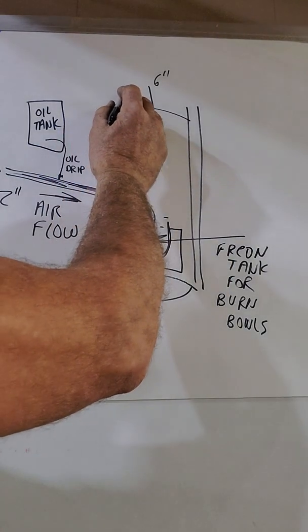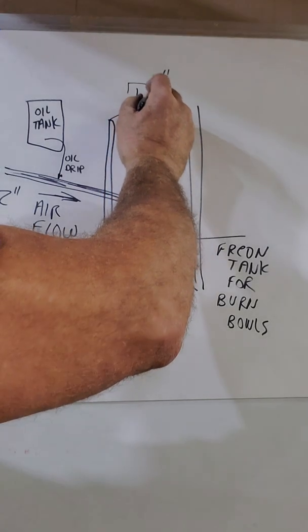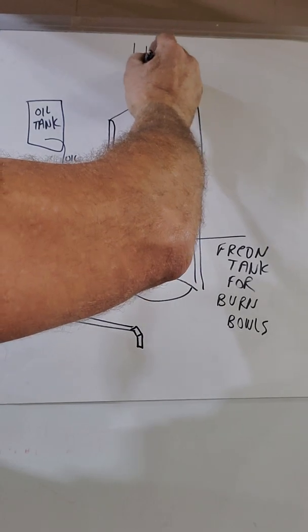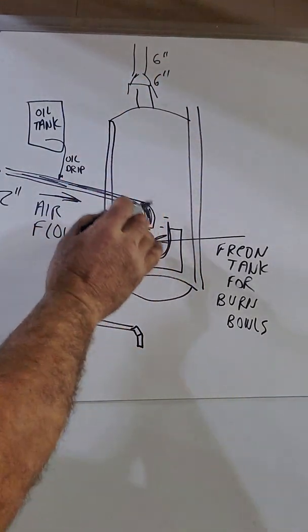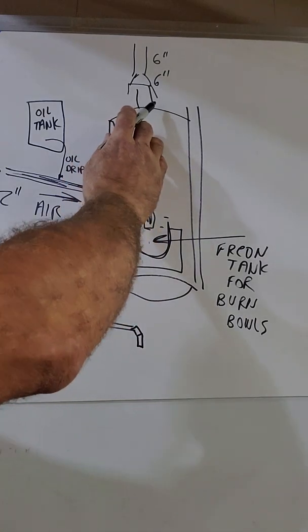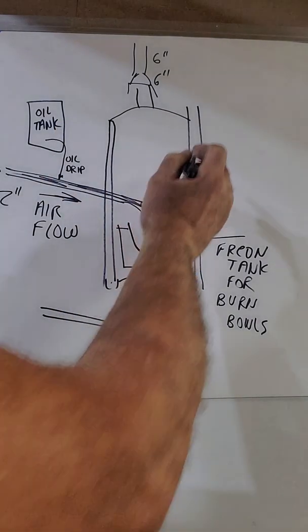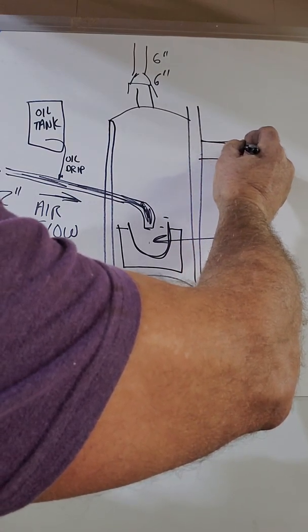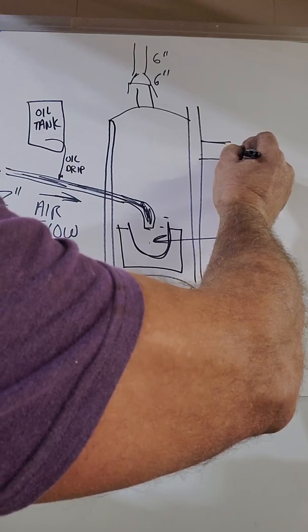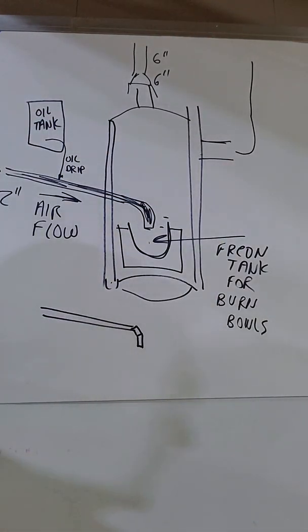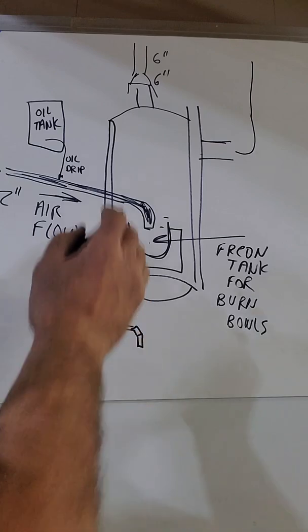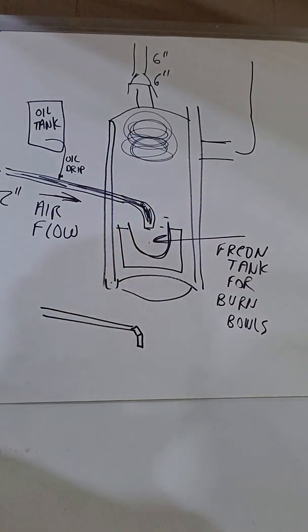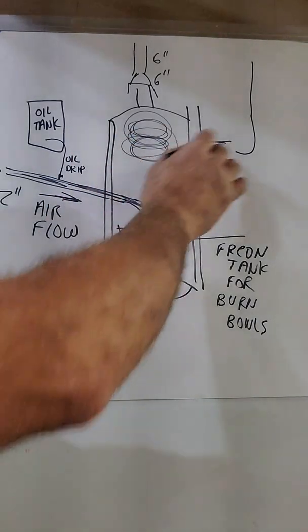And then I put a like a seven by six reducer, then go up with six inch, that way you got kind of like an air gap there and it doesn't leak right there. Now this one guy, he recommended coming out the side here and then maybe putting a 90 on it and then going up. And the reason why he suggested that, I have never done that, but he said this would burn hotter and burn more oil off before it went out the exhaust.